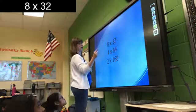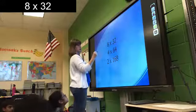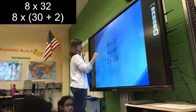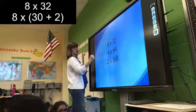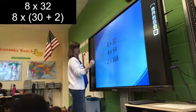Okay, so you're breaking apart the 30 into, you're thinking of it like this, 8 times 30 plus 2. And then you're going to multiply the first part together, 8 times 30.